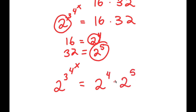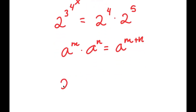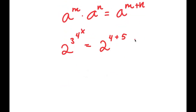Now all my terms are bases of 2. If I have something in the form of a to the power of m times a to the power of n, this is equal to a to the power of m plus n. So 2 to the power of 4 times 2 to the power of 5 is the same thing as 2 to the power of 4 plus 5, which equals 2 to the power of 9. So 2 to the power of 3 to the power of 4 to the power of x is equal to 2 to the power of 9.